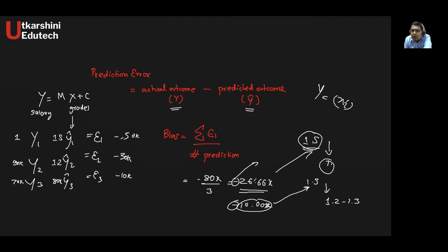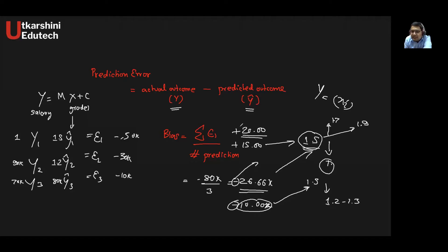The negative sign tells you the direction of the error, while the magnitude tells you the amount of error. Similarly, if a model has a bias of plus 15, and I predicted a salary of 1.5 lakh, the actual salary is going to be higher — maybe 1.7 lakh. If the bias is plus 20, the actual value would be close to 1.9 lakh. So the sign and magnitude of the bias together give you its interpretation.